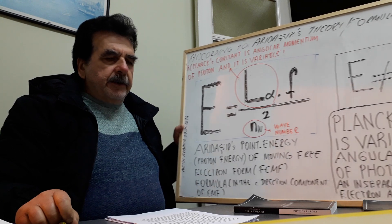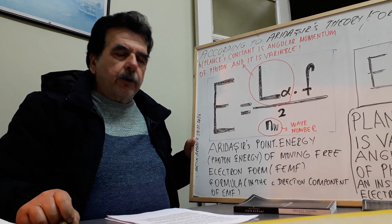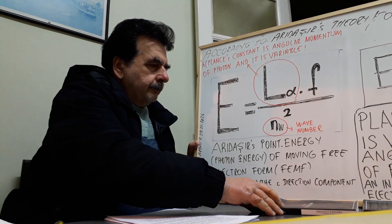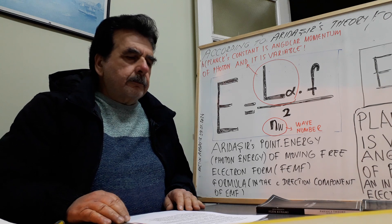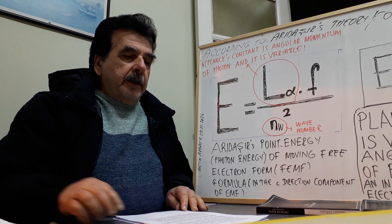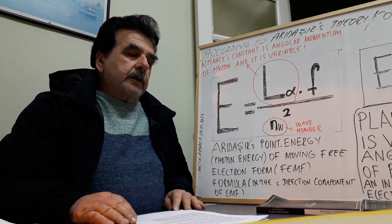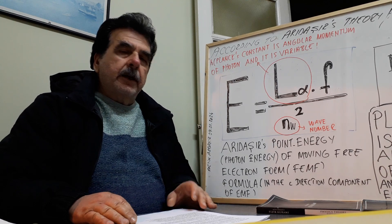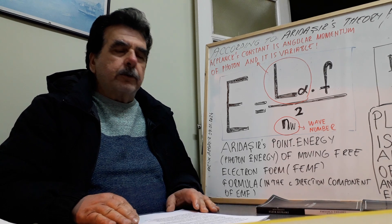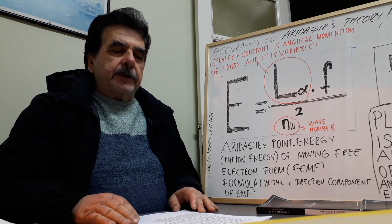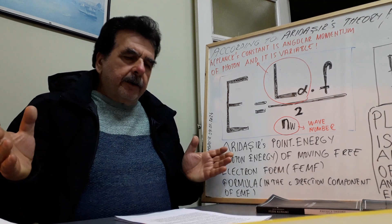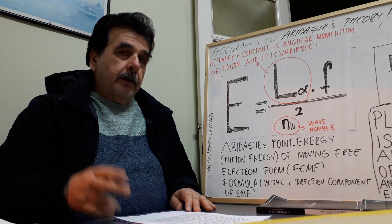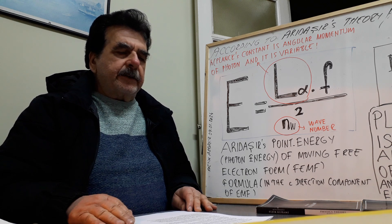Planck's constant is the variable angular momentum of a photon. Planck's constant is not a constant. Although energy equals Planck's constant multiplied by frequency — the formula introduced by Planck as a solution to the ultraviolet catastrophe and the continuous black body radiation graph — it is impossible to reconcile the black body radiation graph with this formula. Planck's constant is not a constant.